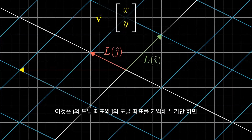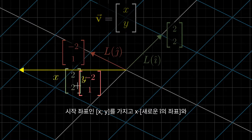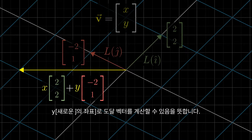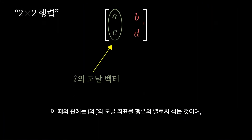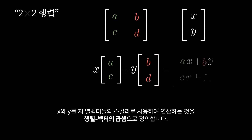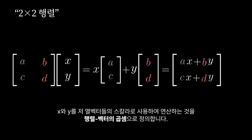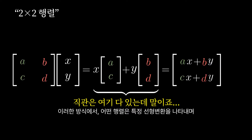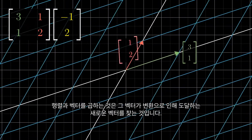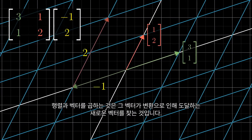This means if you keep a record of the coordinates where i-hat lands and the coordinates where j-hat lands, you can compute that a vector starting at x, y must land on x times the new coordinates of i-hat plus y times the new coordinates of j-hat. The convention is to record those coordinates as the columns of a matrix, and to define this sum of scaled versions of those columns by x and y to be matrix-vector multiplication. In this way, a matrix represents a specific linear transformation, and multiplying a matrix by a vector is what it means computationally to apply that transformation to that vector.